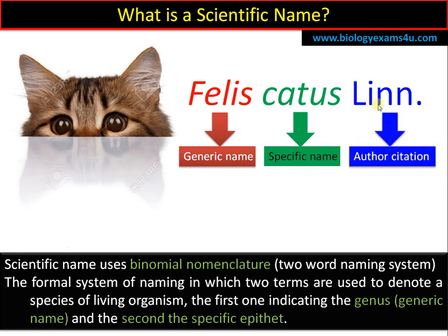The third part, 'Lin,' is called the author citation. This is the abbreviation of Linnaeus, who described or published this name for the first time as Felis Catus. In short, the scientific name is a two-part naming system in which the first part is the generic name, the second part — Catus — is the specific name, and the third part, the author citation, is optional.